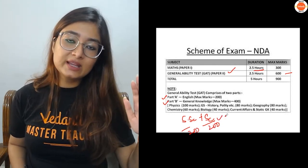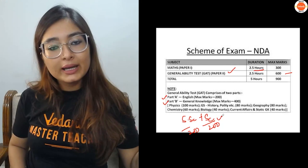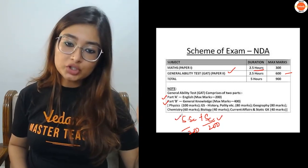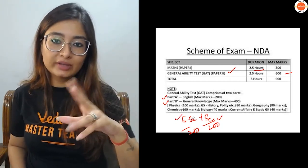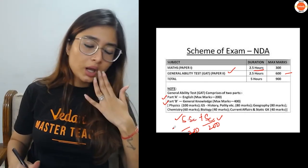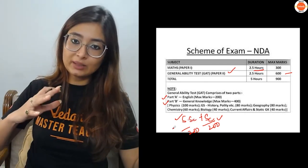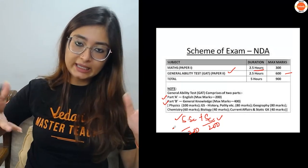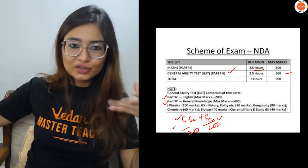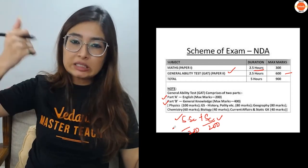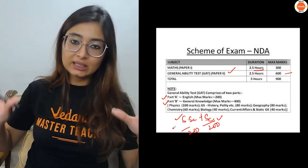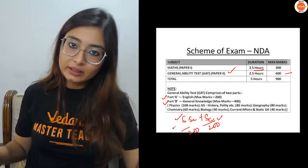In Science: Physics will be 100, Biology will be 40, and Chemistry will be 60. In the Social Science section, History and Civics will be 80 marks, Geography around 80 marks. The distribution is approximately 80, 80, and 40 marks covering static and current affairs topics.